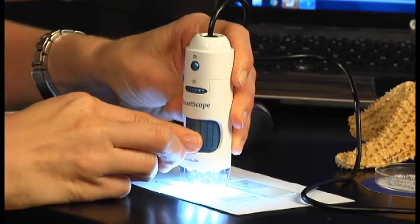And then you can continue to turn the dial to the left. And right there, we have 200x magnification. You can even see the tiny little hairs on the bee wing.